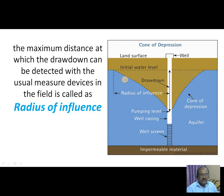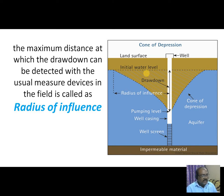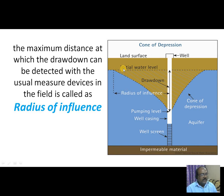The maximum distance at which the drawdown can be detected — that means the difference from the initial water table level to the cone of depression — and the horizontal distance of the influence of water level is known as the radius of influence. So, the maximum distance at which the drawdown can be detected is called the radius of influence.